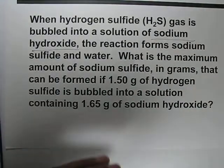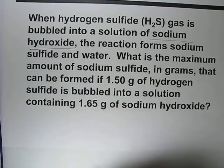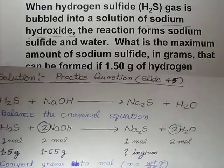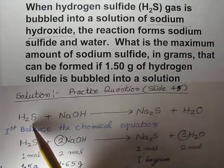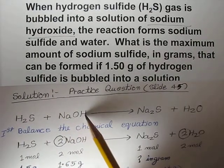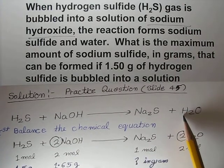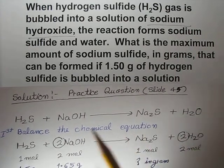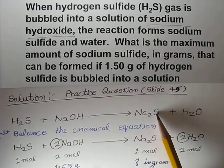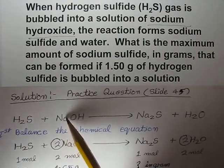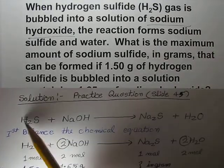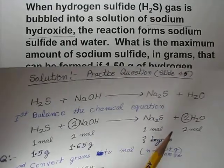Whenever you have to solve any question, write the chemical equation first and make sure the reaction is balanced. Checking: there are two hydrogen on the reactant side but only two hydrogen on the product side. Sulfur: one sulfur on the reactant side, one on the product side — balanced. Sodium: one sodium on the reactant side, two on the product side — not balanced. So this is not a chemically balanced reaction; we have to balance it first.